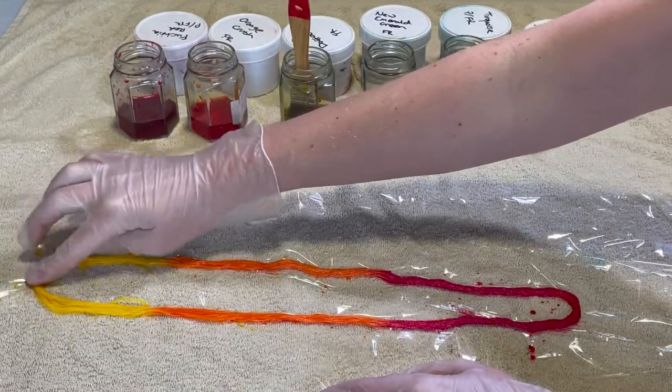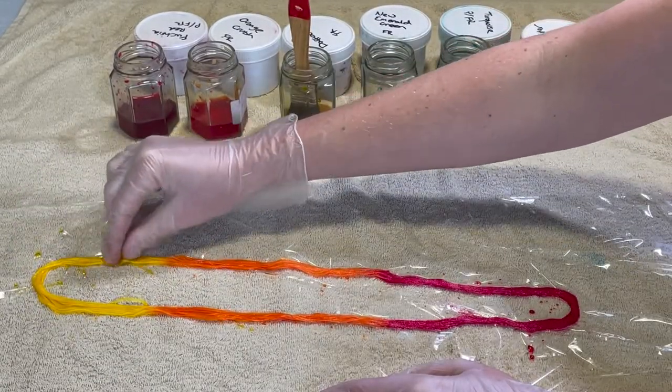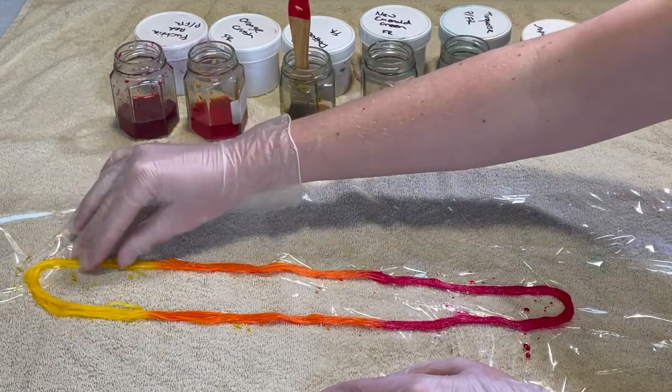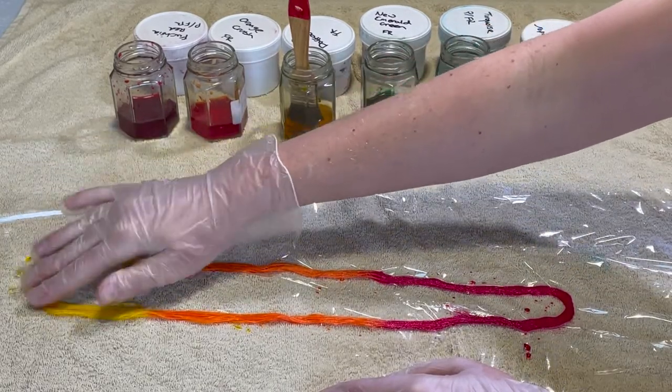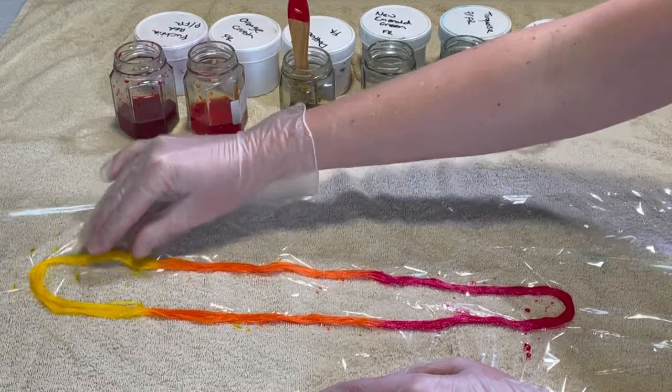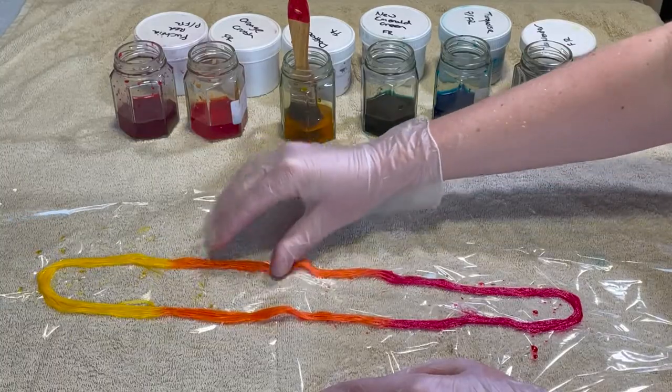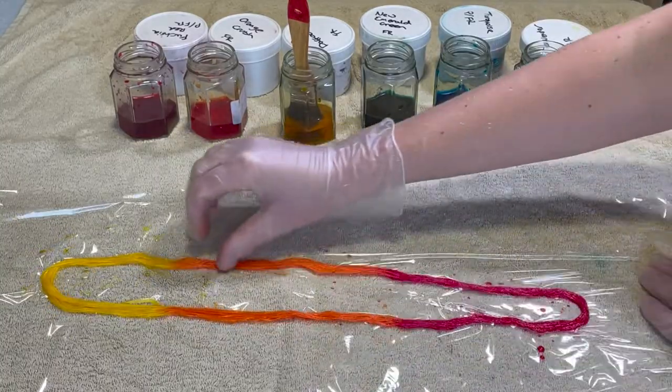So with acid dyes you need an acid such as citric acid or vinegar to help the dye to set to the yarn. Whereas with plant-based fibers like this you need soda ash. So this has been soaking in soda ash.